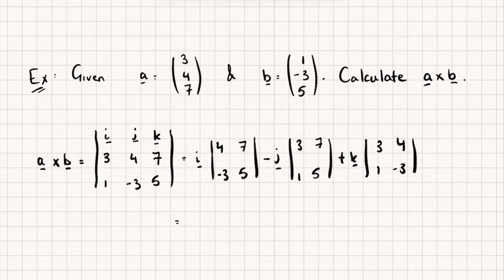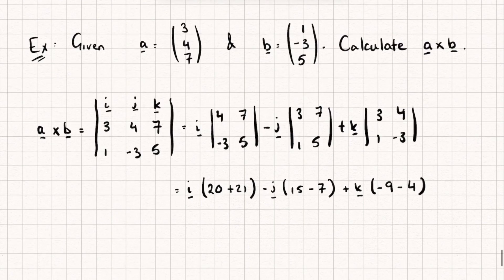So we get i multiplied by (20 subtract -21, so plus 21), minus j multiplied by (15, 15 subtract 7), plus k multiplied by (-9 subtract 4). Remember, don't forget to distribute this negative in the second term.